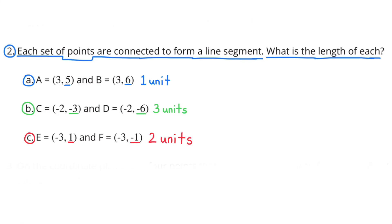Part C: The coordinates for point E are negative 3 and 1, and the coordinates for point F are negative 3 and negative 1. Their x-coordinates are the same, but their y-coordinates are different, and the difference between 1 and negative 1 is 2 units, so the length of the line segment is 2 units long.